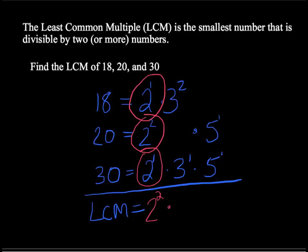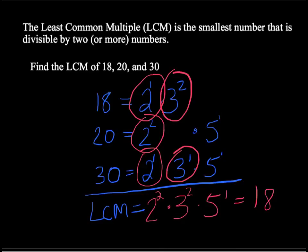Similarly, look at the 3s. We have a 3 to the power of 2 and a 3 to the power of 1. And the only power of 3 that is divisible by both of those, or the least power of 3 that is divisible by both of those, is 3 to the power of 2. Finally, dealing with the 5s. Well, there's only 5 to the power of 1, so we're done. We'll write down 5 to the power of 1. If you multiply all that out, guess what you get? 180.